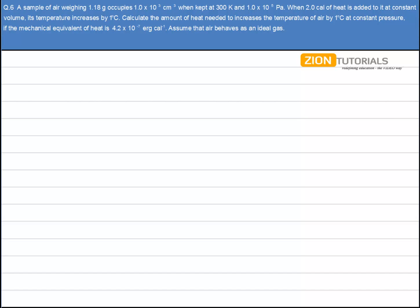A sample of air weighing 1.18 g occupies 1 x 10^3 cm^3 when kept at 300 Kelvin and a pressure of 10^5 Pascal. When 2 kcal of heat is added to it at constant volume, its temperature rises by 1 degree.